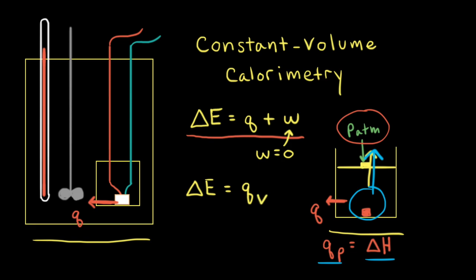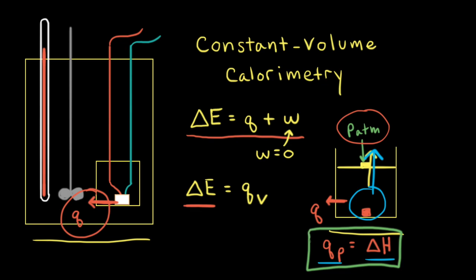So the heat that's transferred from our combustion reaction in this case is not equal to the change in enthalpy — it's equal to the change in the internal energy delta E. So the heat transferred at constant pressure equals the change in enthalpy delta H, while the heat transferred at constant volume equals the change in the internal energy delta E.